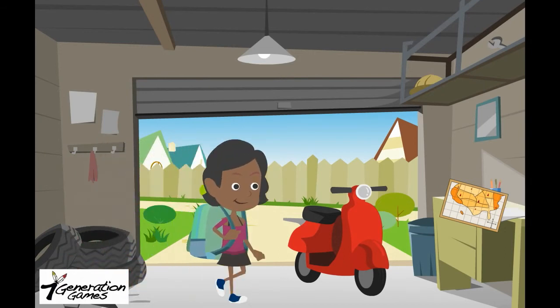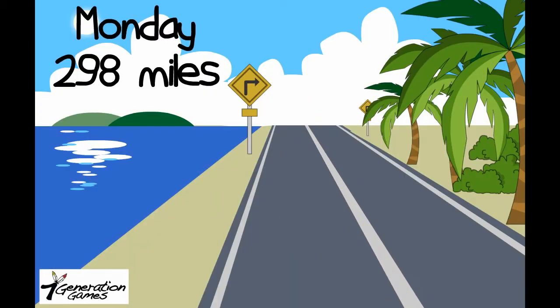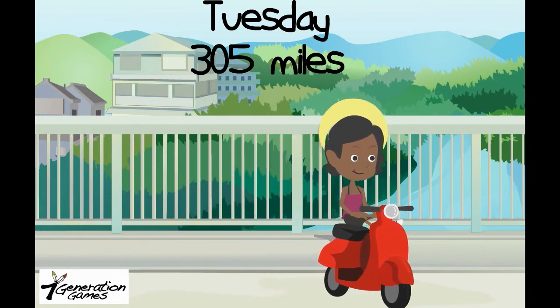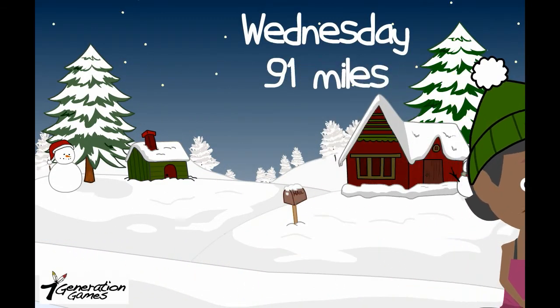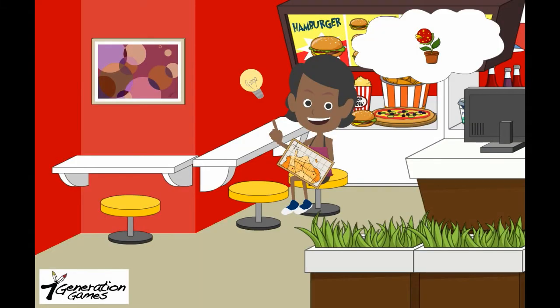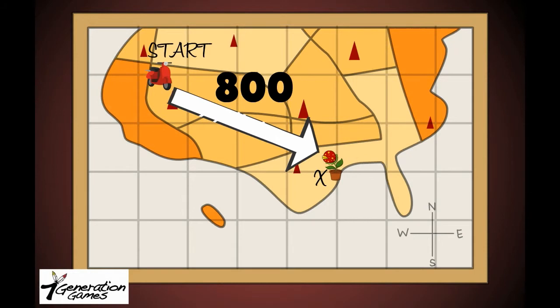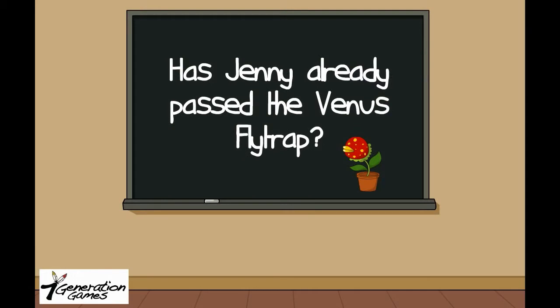Jenny went on a road trip. On Monday, Jenny drove 298 miles. On Tuesday, Jenny drove 305 miles. On Wednesday, Jenny drove 91 miles. On Thursday, Jenny realized she wanted to visit the world's largest Venus flytrap. When she looked at the map, Jenny realized the Venus flytrap was 800 miles from where she had started. Has Jenny already passed the Venus flytrap on her trip?